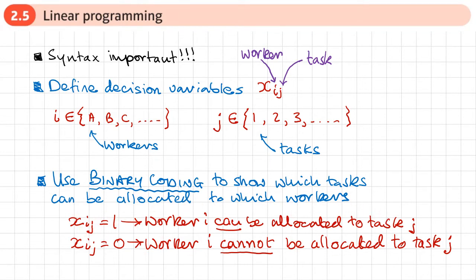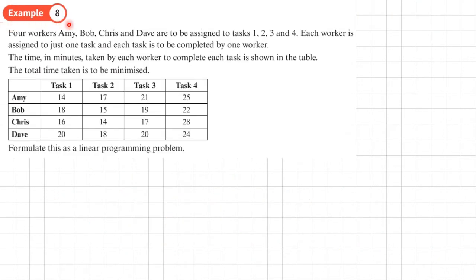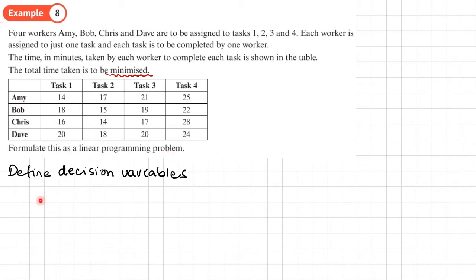Example 8: four workers — Amy, Bob, Chris, and Dave — are to be assigned to tasks one, two, three, and four. Each worker is assigned to just one task and each task is completed by one worker. The time in minutes for each worker on each task is given in a table, and the total time is to be minimized. We formulate this as a linear programming problem, defining the decision variable X sub I J.